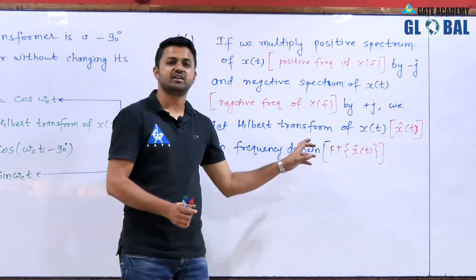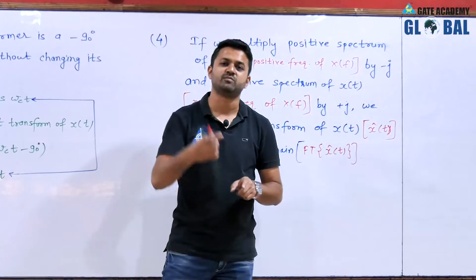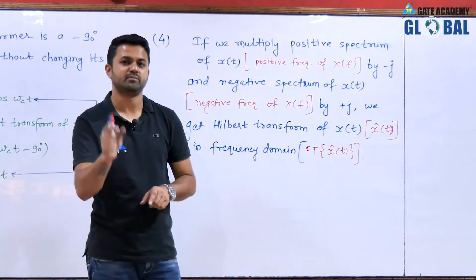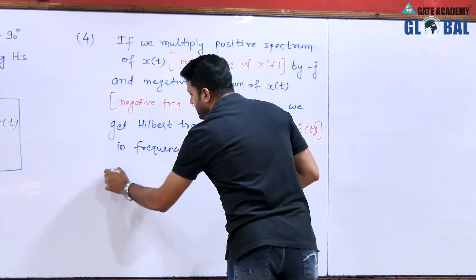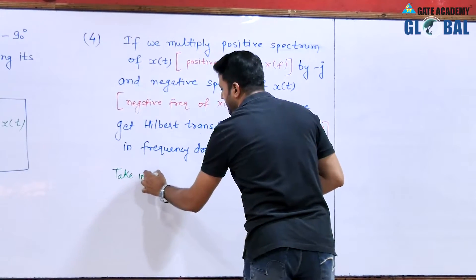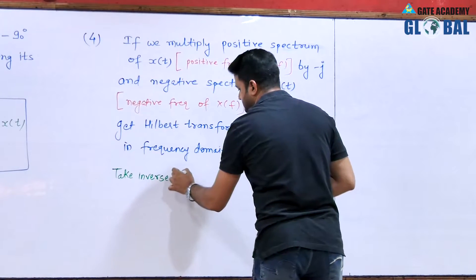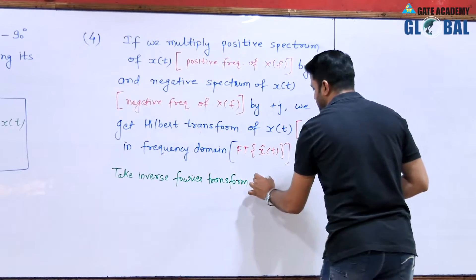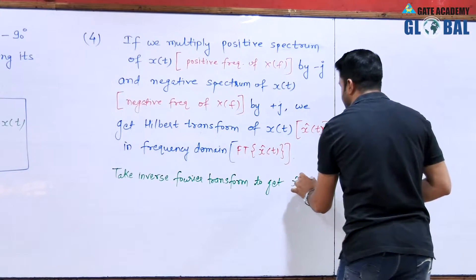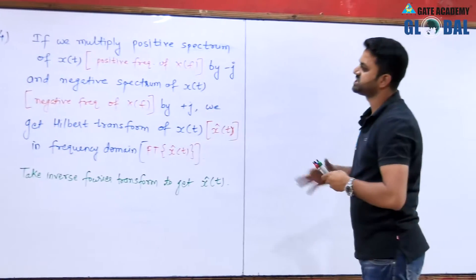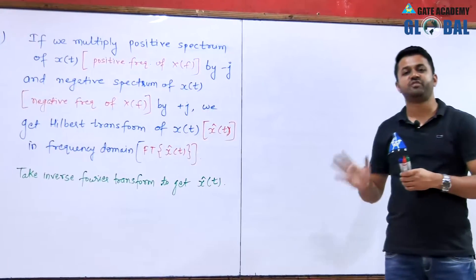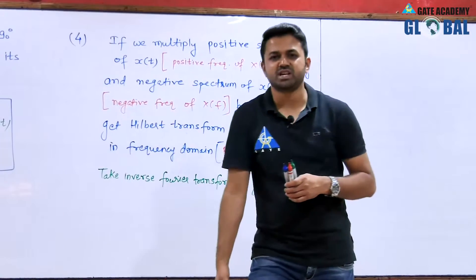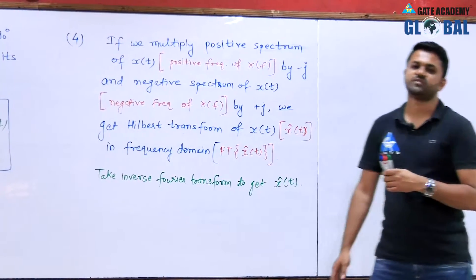After getting the Fourier transform of the Hilbert transform, we take the inverse Fourier transform to get the Hilbert transform in time domain x̂(t). Whenever the spectrum of any signal is given and we want to calculate the Hilbert transform, we multiply the positive frequency by minus j and the negative frequency by plus j, then take the inverse Fourier transform.